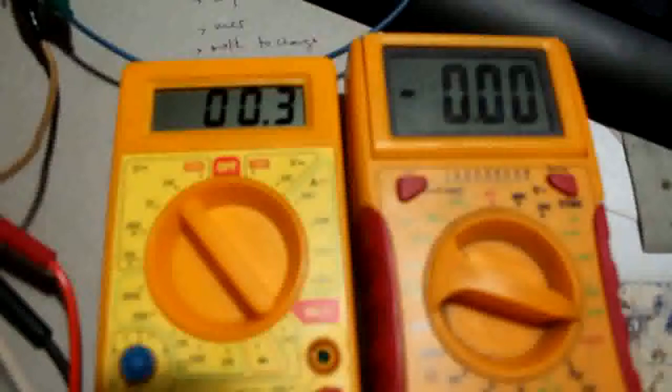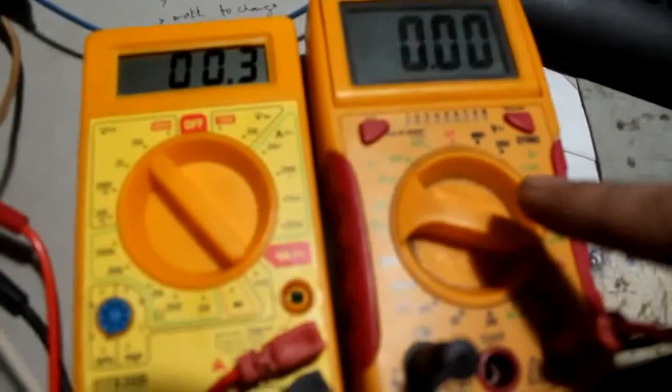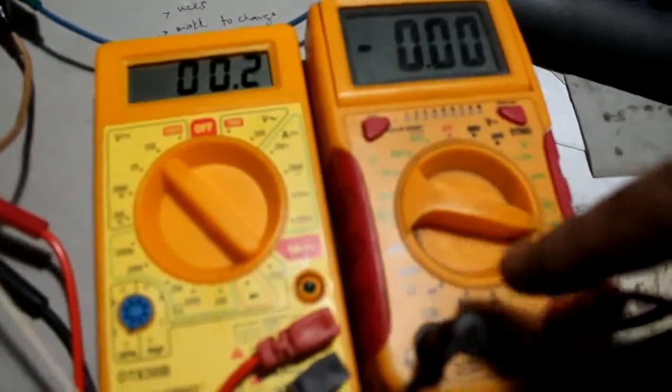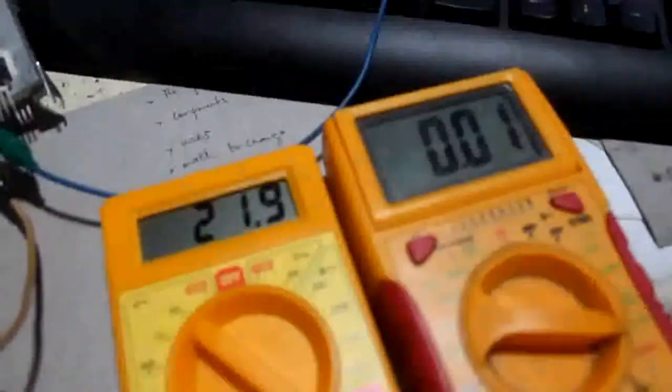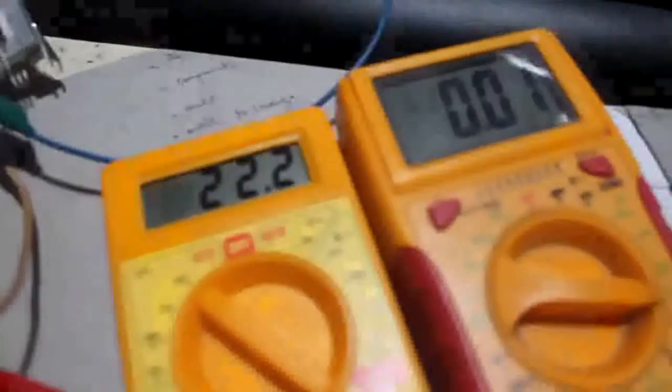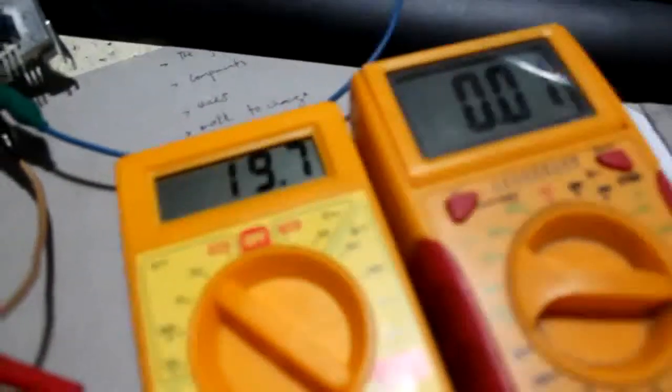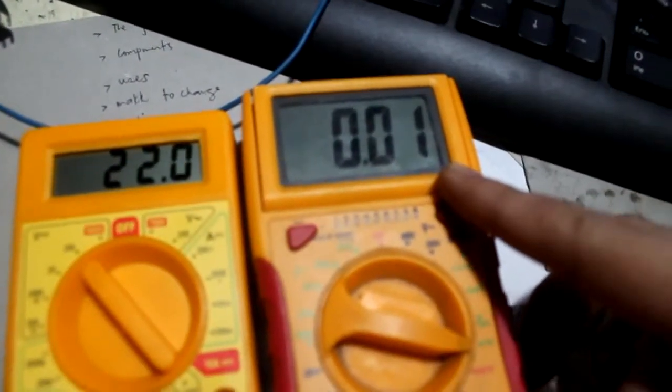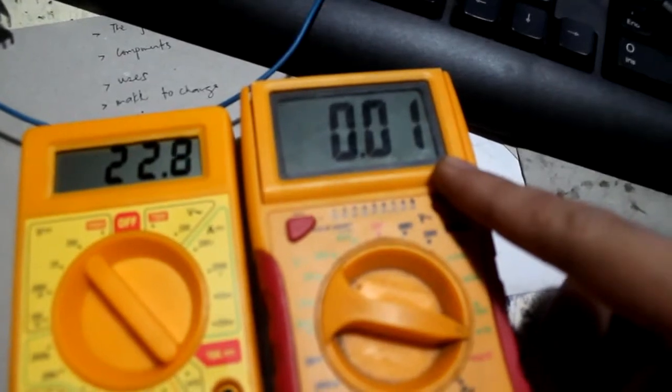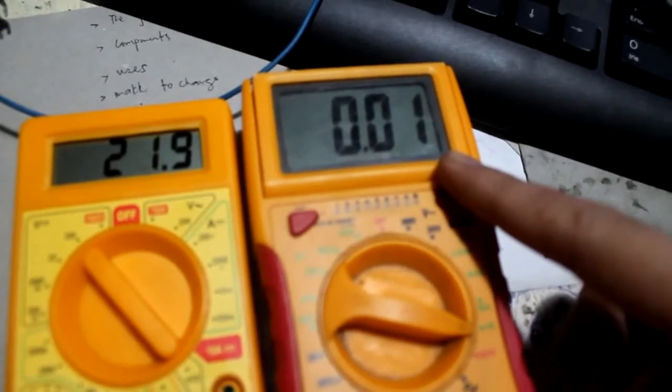So over here we have no readings yet in the amperage since I'm not connecting it to the positive side. So let's connect it and here's the circuit connected to the positive rail so it draws 0.01 amp or it means 10 milliamps.